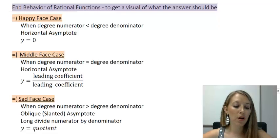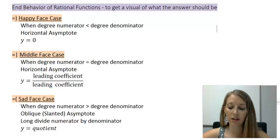Remember, if we are in happy or middle face case, the infinite limits are going to be our horizontal asymptote. But what's going to happen during sad face case? I told you there is a way to do it without having to do the long division. And the way to do that is by using the official way of finding infinite limits.